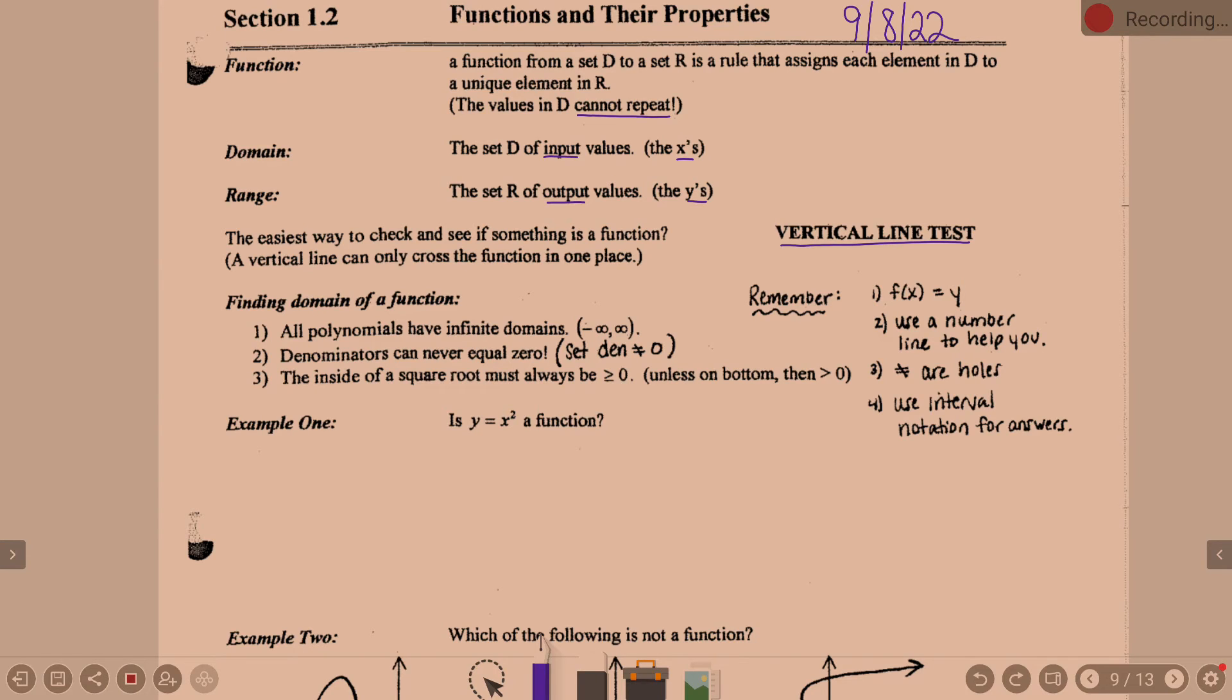Denominators can never equal zero because we can't divide by zero, right? So denominators can never equal zero. And then, the inside of a square root must always be positive. And so, here when it says greater than or equal to zero, what are they trying to say? That's math speak for saying the inside of a square root must always be positive.